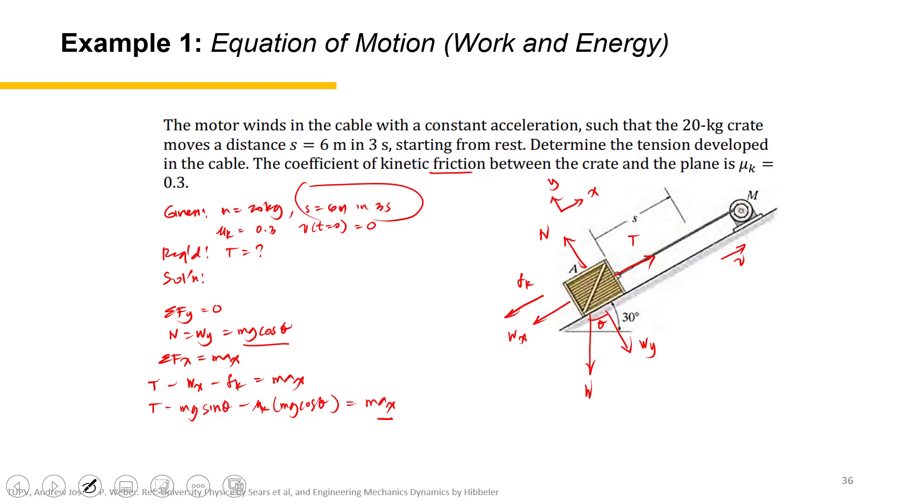So let's solve for a_x. That would be: s equals v_0 t plus one half a t squared.